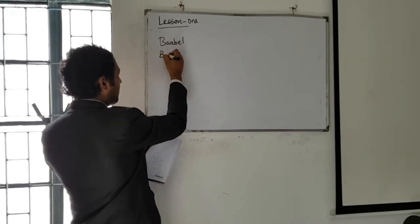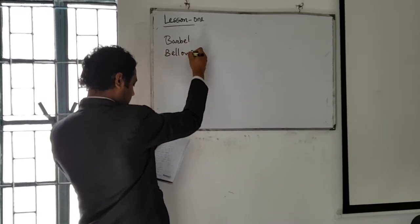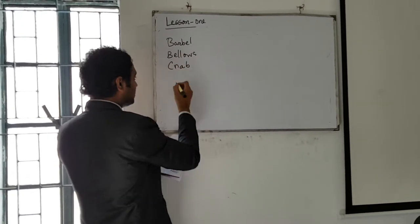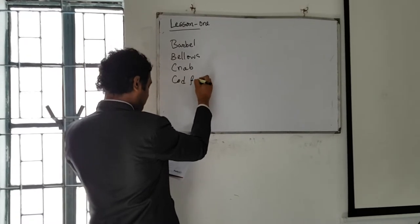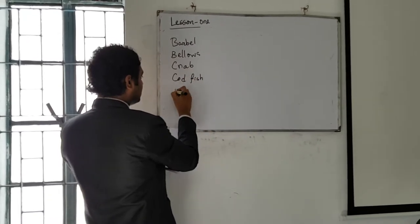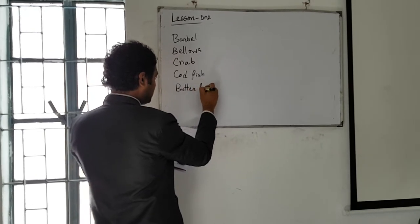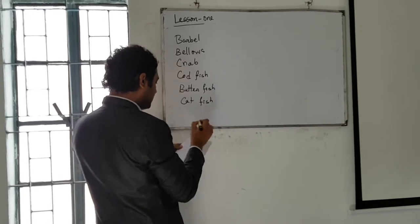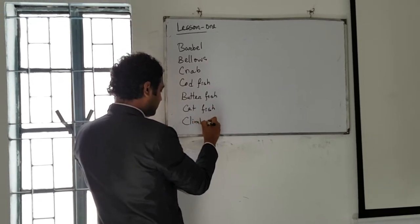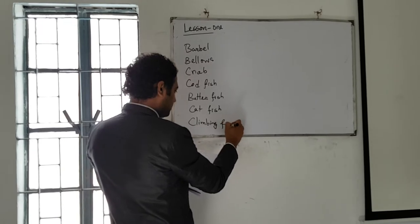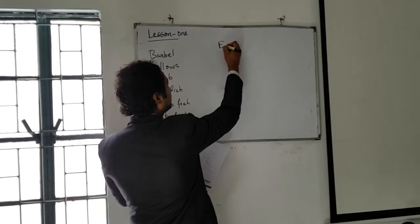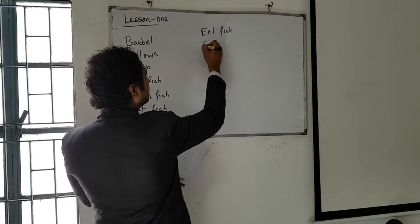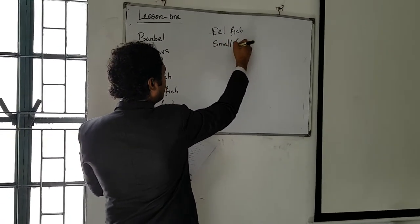The next one is bellows. Third one is crab. Fourth one is caught fish. Fifth one is butter fish. Catfish. Clambing fish. Eel fish. Small or fry fish.